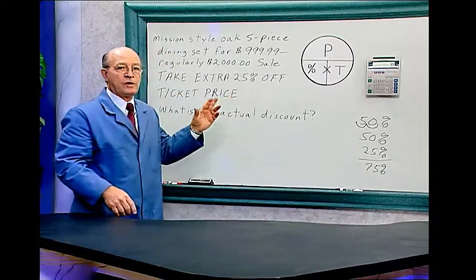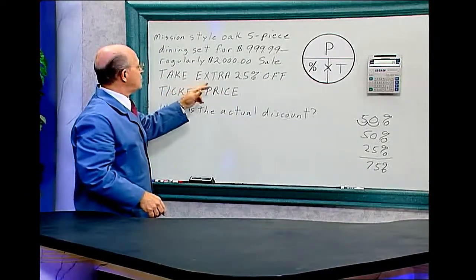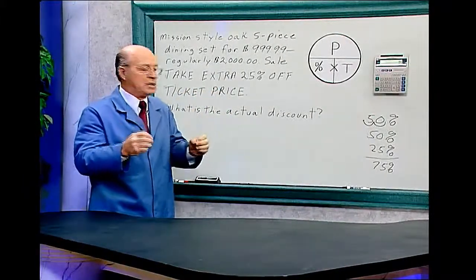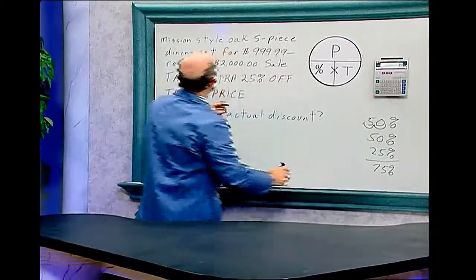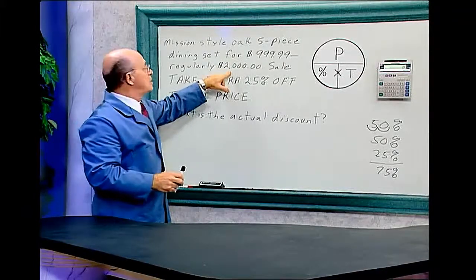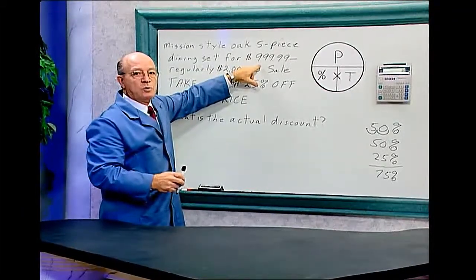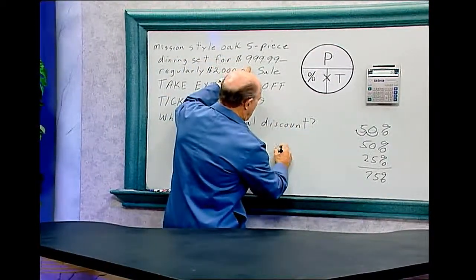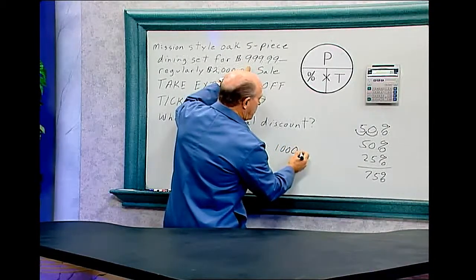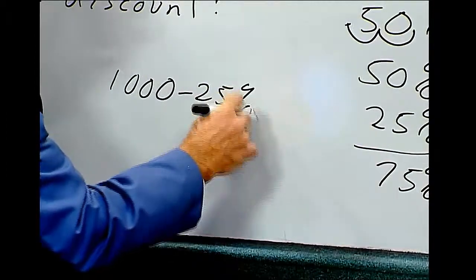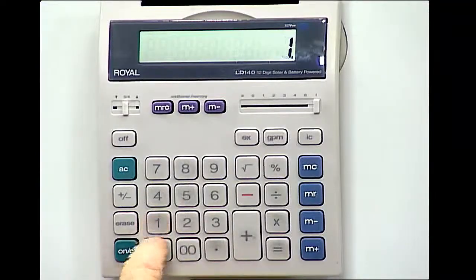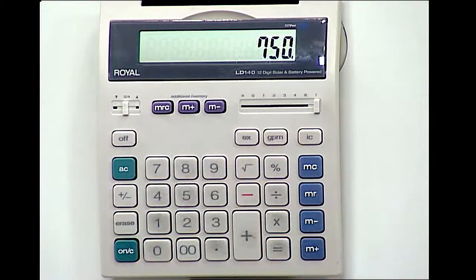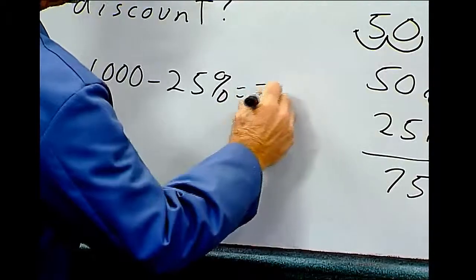Let's look at what it says carefully. It says take an extra 25% off the ticket price. The question is: what is the ticket price? The $2,000 is the original price — the $1,000 is the ticket price. So what we want to do is deduct 25% from the $1,000 ticket price. On the calculator: $1,000 minus 25% equals $750.